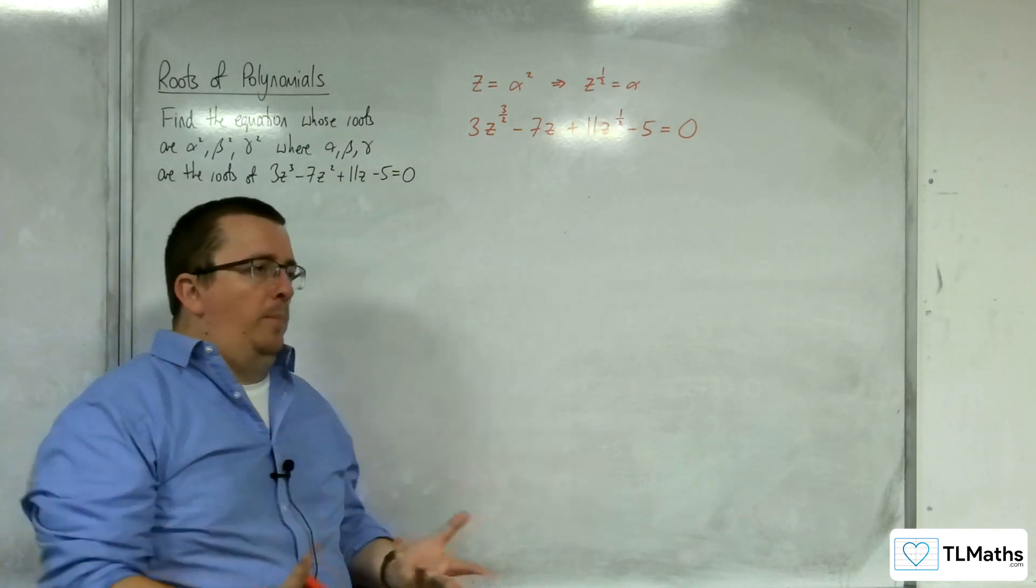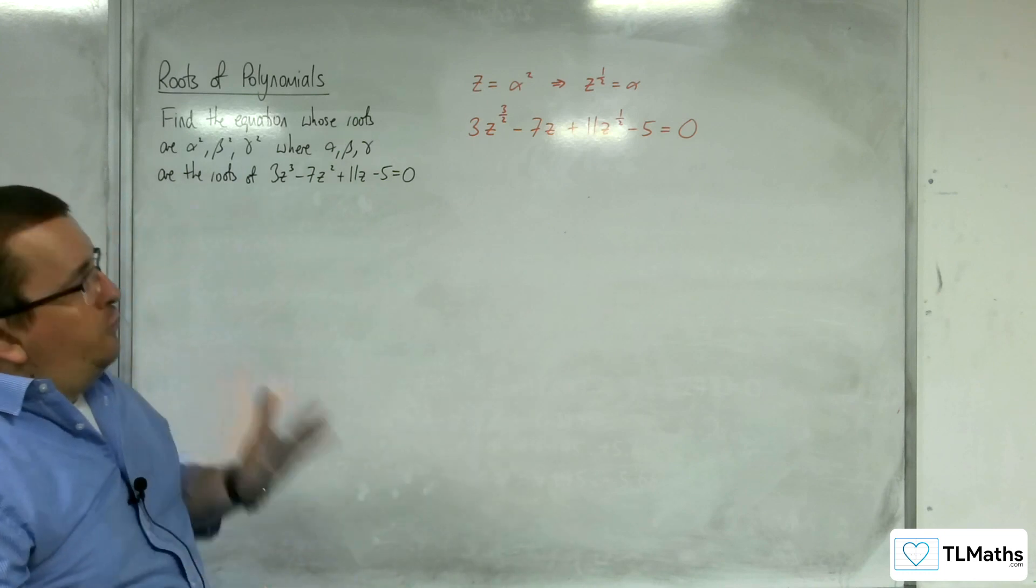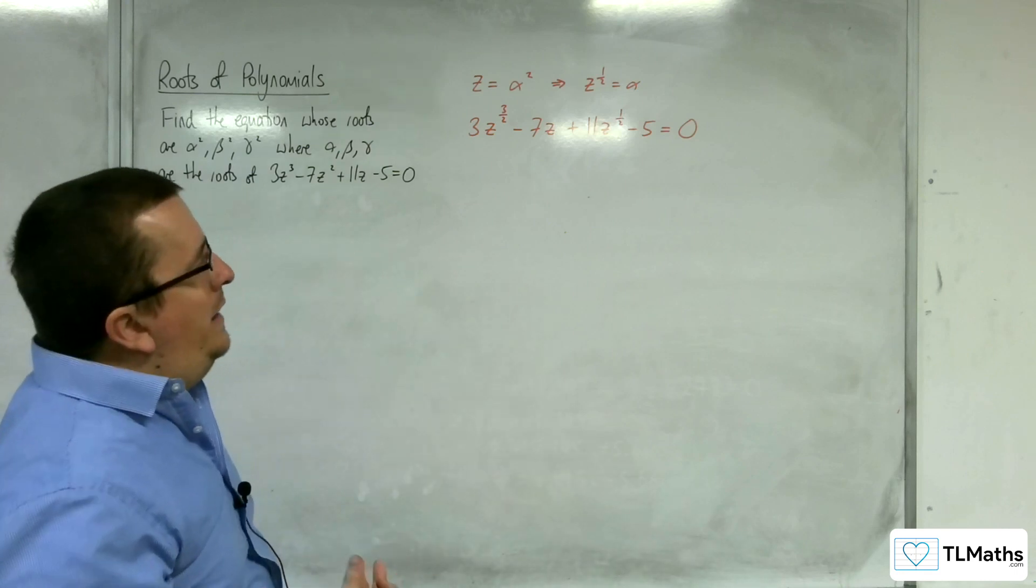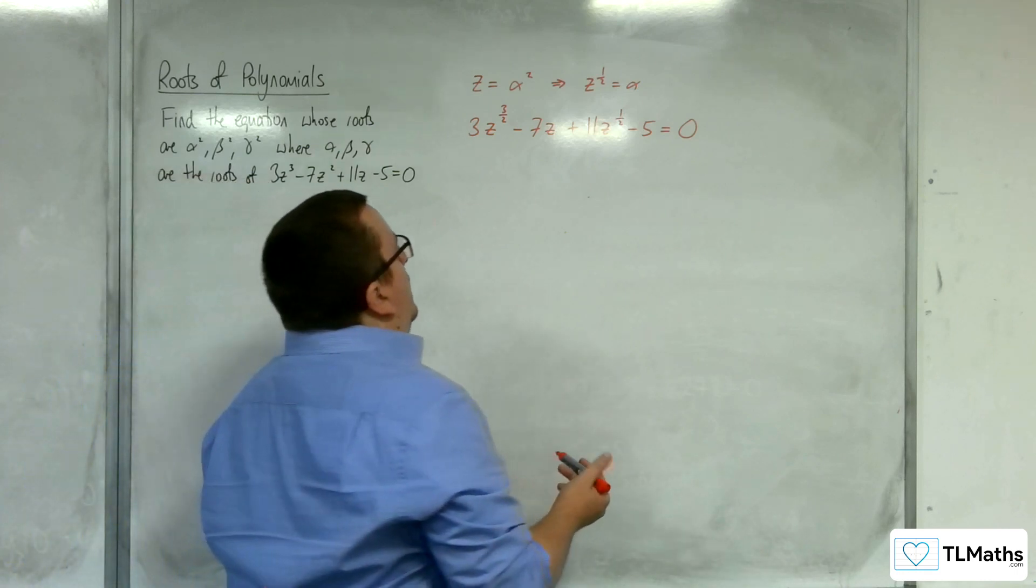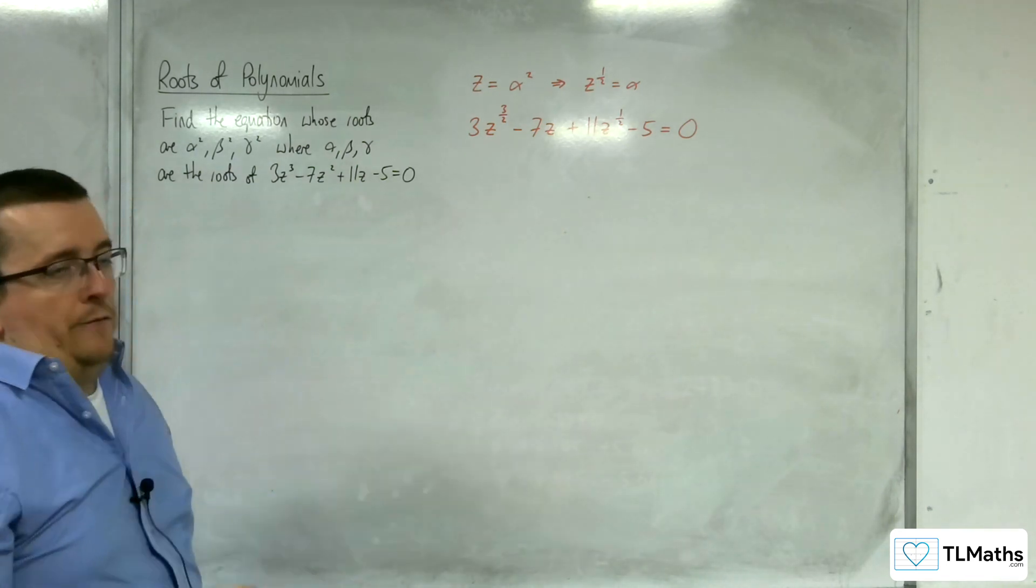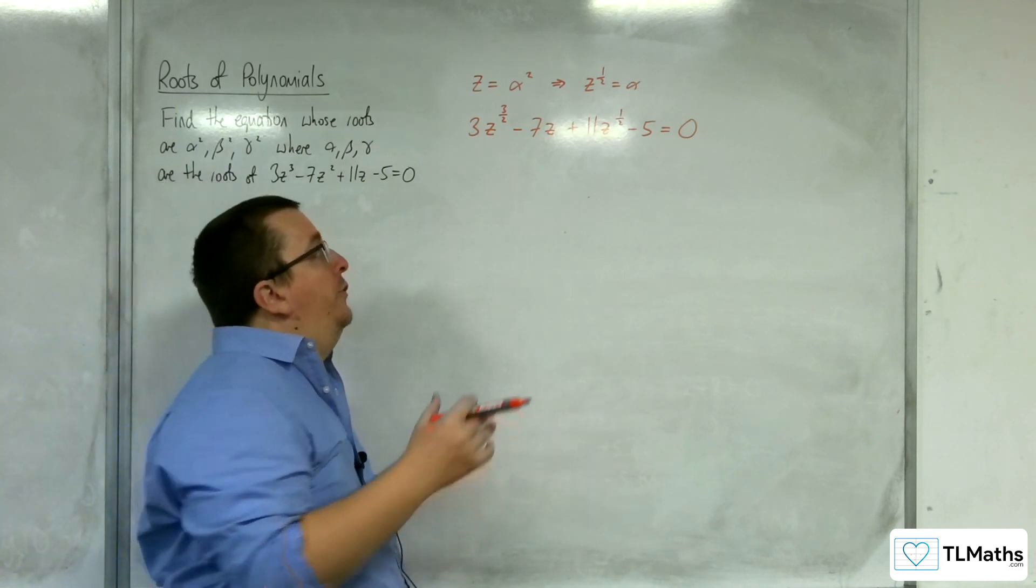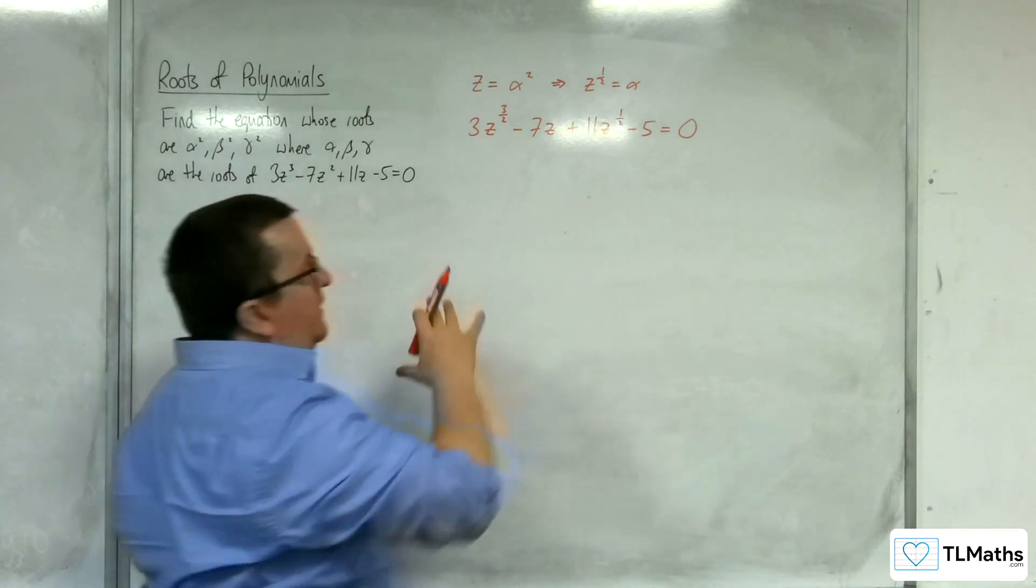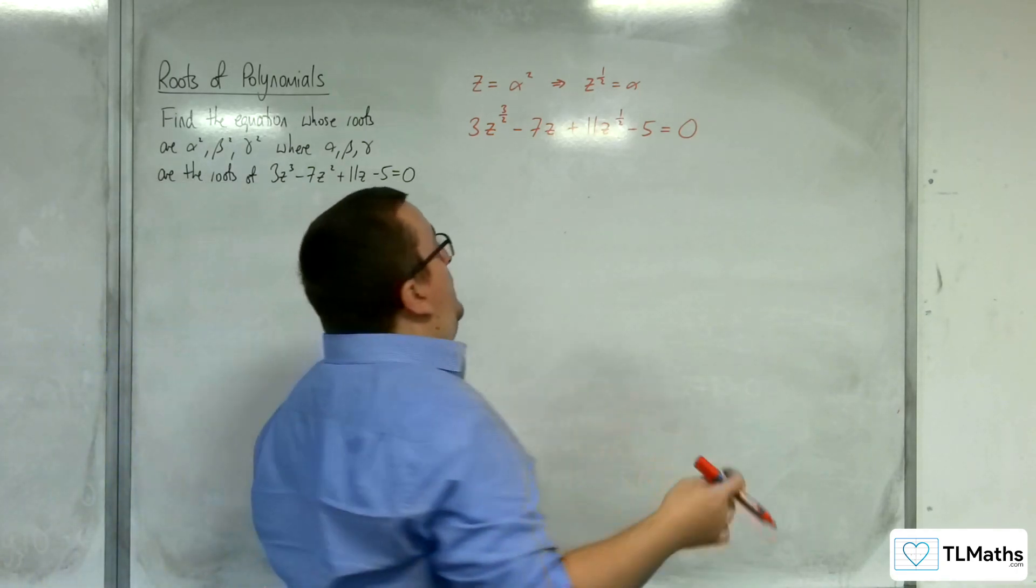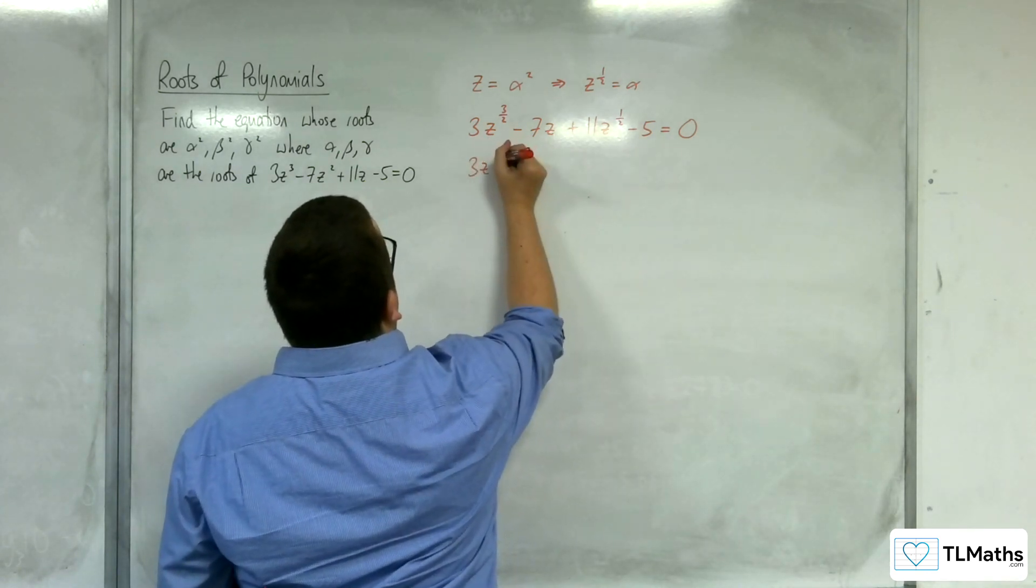Now, the problem here is that really what I want to get to is a cubic equation, and the problem is that this is not a cubic equation at the moment. So how am I going to get around this? I'm going to square everything, but to make this easier for yourself,